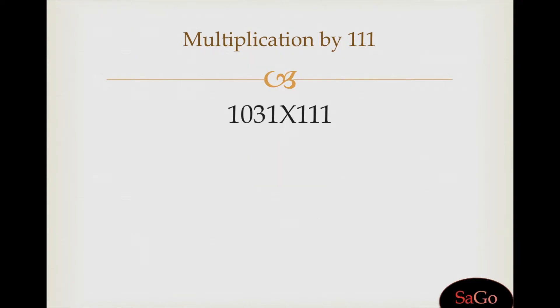Let's take another example of multiplication by 111. Write down 1031, put two zeros on both sides of this digit. Now add digits in pairs of three each. Zero plus zero plus one is one, right one.